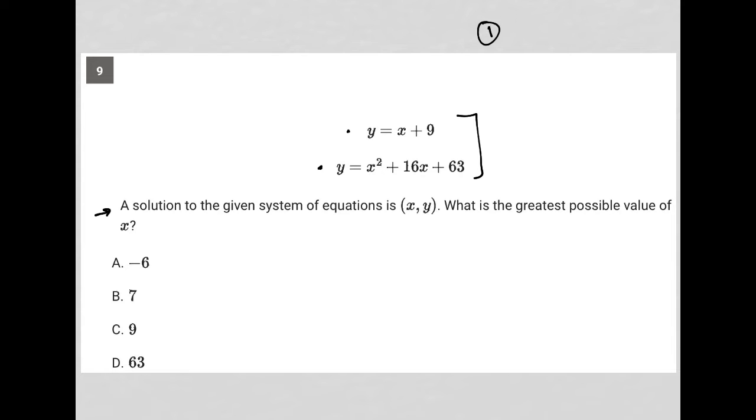So first and foremost, the easiest way to solve this question is by plugging both of these into Desmos. You would find a graph from y equals x plus 9. You'd find a graph from y equals x squared plus 16x plus 63. And this line here, y equals x plus 9, is linear.